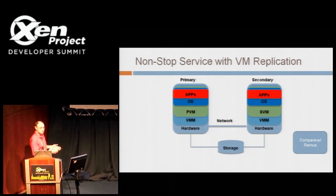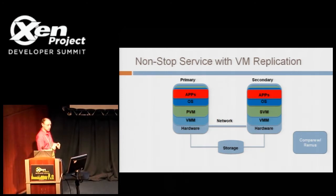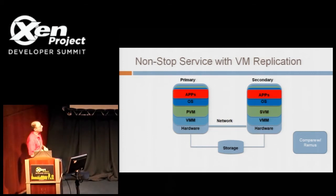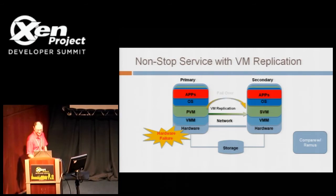That allows them to keep the machine state exactly the same between the two hosts. If there's a failure in Colo, the secondary VM is already running and it will just take over. For Remus, the secondary VM will be started up and then it'll take over.